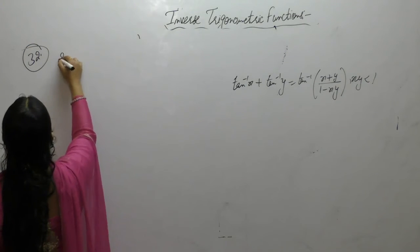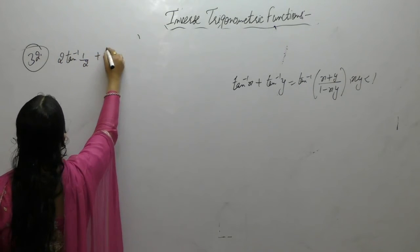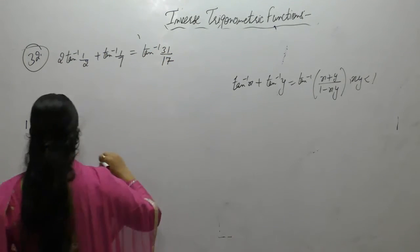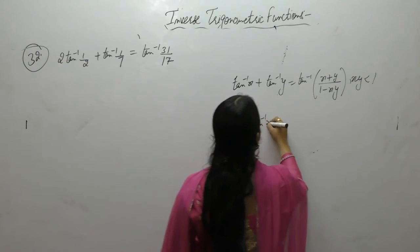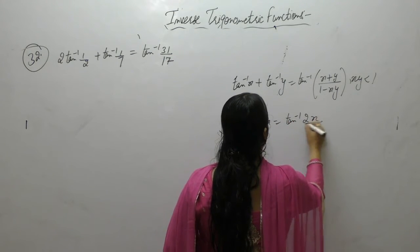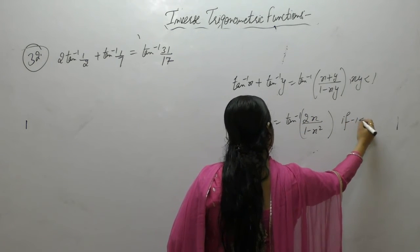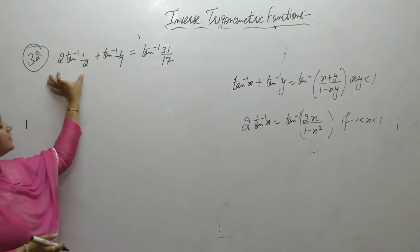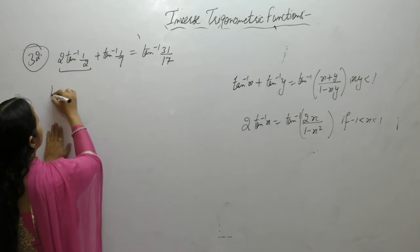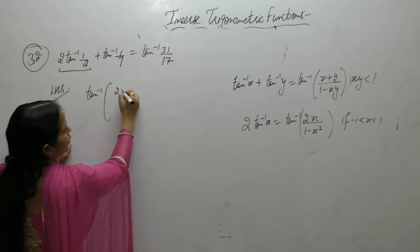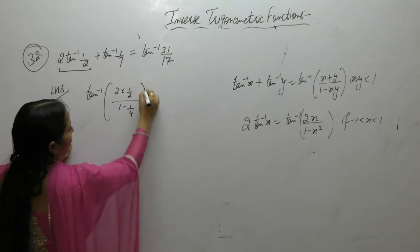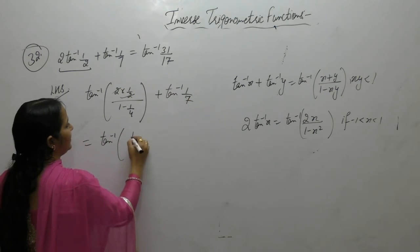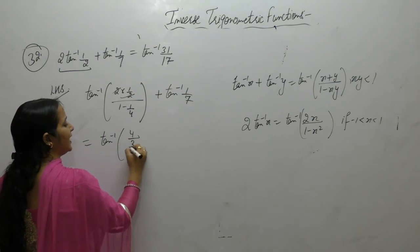Prove that 2tan⁻¹(1/2) + tan⁻¹(1/7) = tan⁻¹(31/17). The formula for 2tan⁻¹x = tan⁻¹(2x/(1-x²)), where x lies between -1 and 1. First apply this formula to 2tan⁻¹(1/2), which gives tan⁻¹(4/3), plus tan⁻¹(1/7).